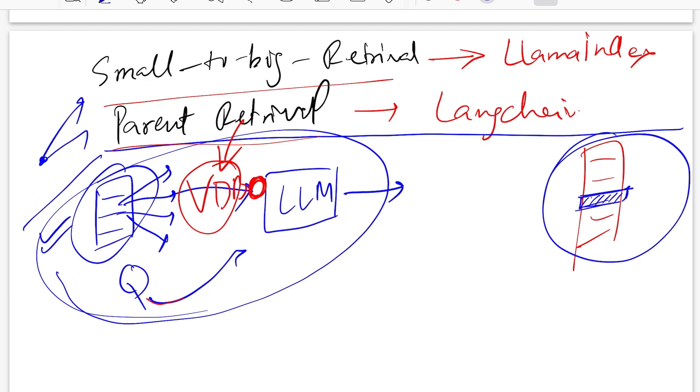On the other hand, if we retrieve smaller chunks, for example if you chunk your things at a sentence level, then there is a chance of you losing out on the surrounding context that could be helpful and supporting the argument. To balance out the trade-off for both techniques, we have small-to-big retrieval and parent retrieval.